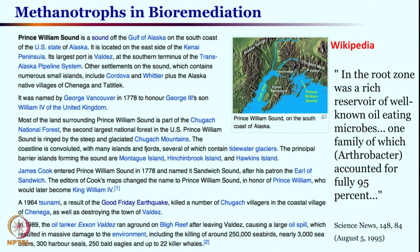Natural or unnatural disasters like this one can be addressed by methanotroph bacteria, by converting the alkanes or oils into the corresponding alcohol products and enabling further degradation over the long term. These methanotroph bacteria are found in locations such as Bath, England, and they have the capability of bioremediation — which is wonderful.